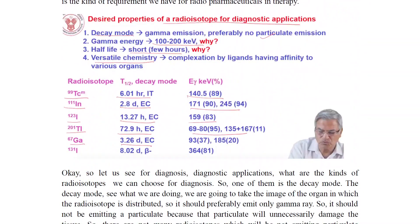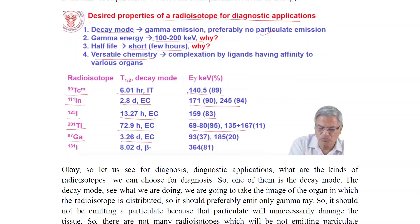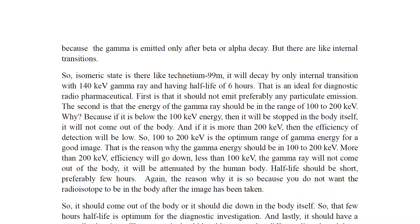Desired properties of a radioisotope for diagnostic application: decay mode should give gamma emission, preferably no particulate emission; gamma energy between 100–200 keV; short half-life of a few hours; and versatile chemistry through complexation by ligands with affinity for various organs. Example half-lives are 6 hours, 2.8 hours, 13.27 hours, and 72.9 hours.